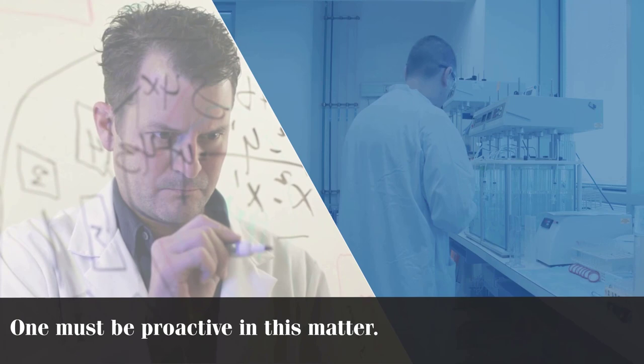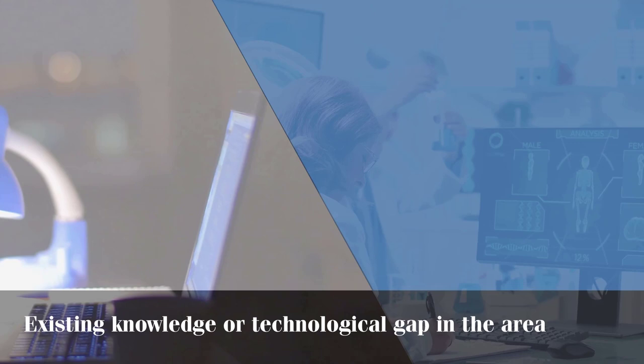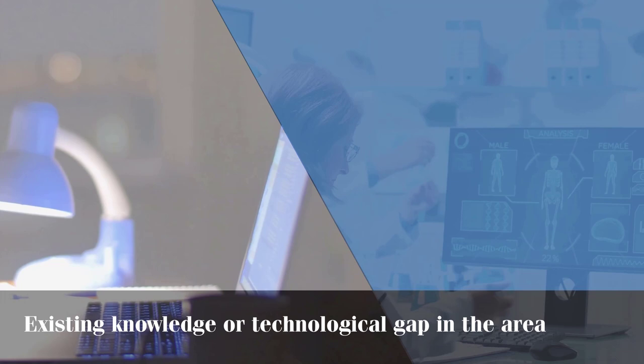Third, background research. After identifying the area of interest, the next step is to look for an existing knowledge or technological gap in the area, or an existing problem which hasn't been addressed so far. This step is known as defining PhD problem. This requires a lot of background research in the area of interest.